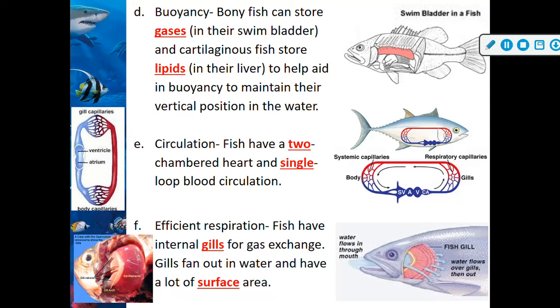Circulation: fish have a two-chambered heart, whereas humans have a four-chambered heart, and a single loop for blood circulation — a much simpler system than we have.